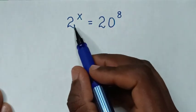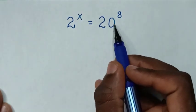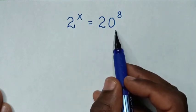Hello! How to solve 2 power x is equal to 20 power 8 to find the value of x from this equation?